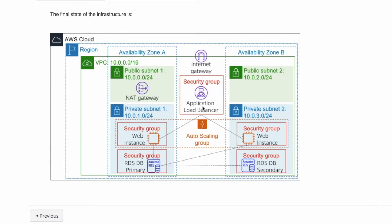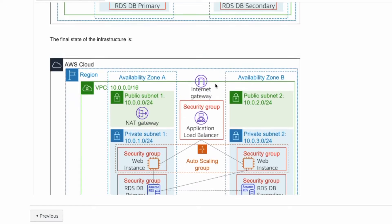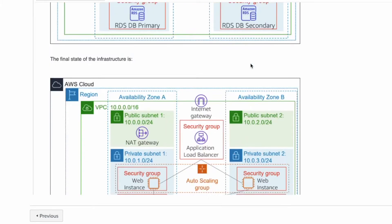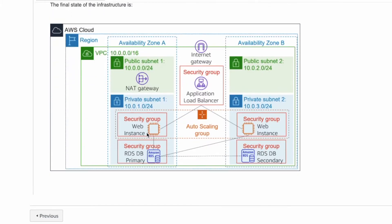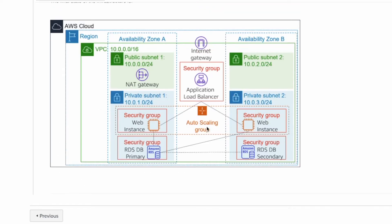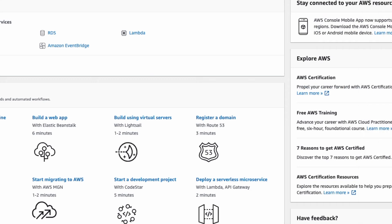We are going to add an Application Load Balancer and an Auto Scaler, and then we will move the web server from the public subnet to the private subnet to give it an extra layer of security. So the first thing we need to do in this lab is create an AMI from the current EC2 that we have.